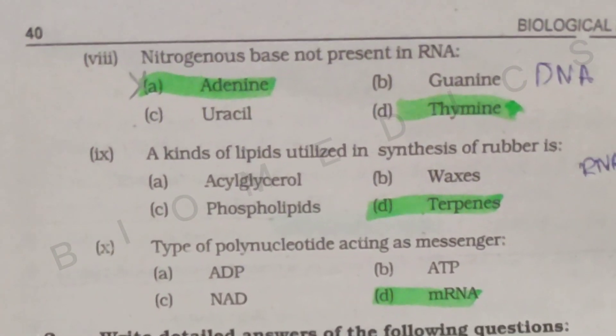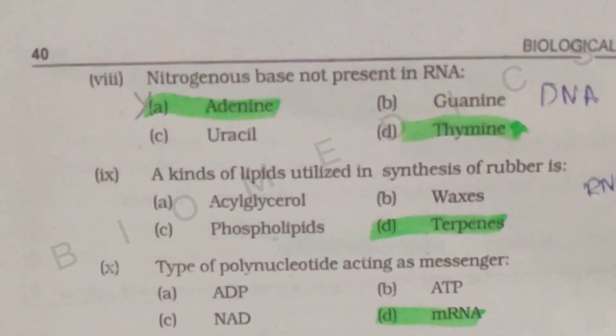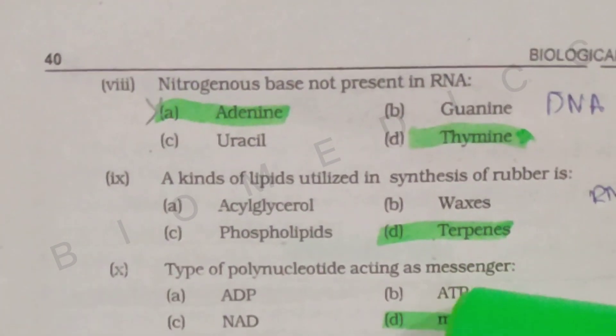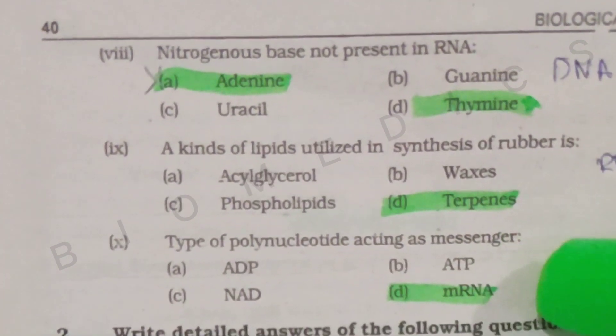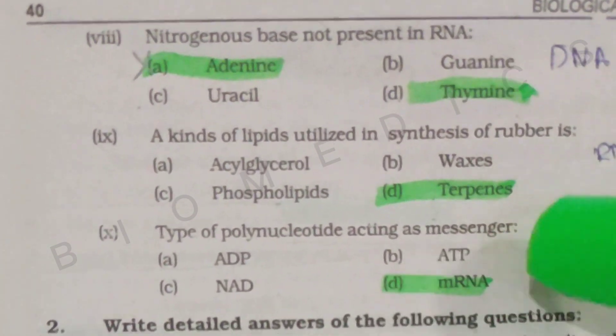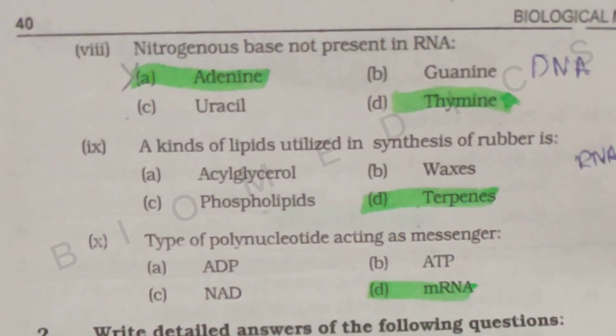Next, we have: type of polynucleotide acting as messenger. They are polynucleotides and they also act as messenger. The questions are completed here. You can ask if you are confused about any MCQs. Thank you.